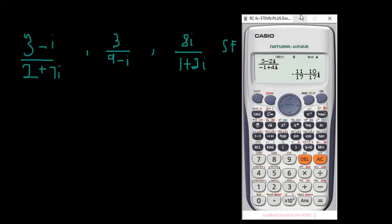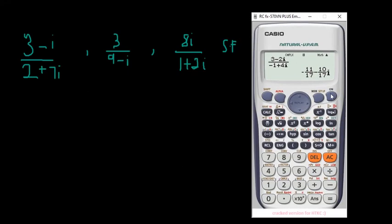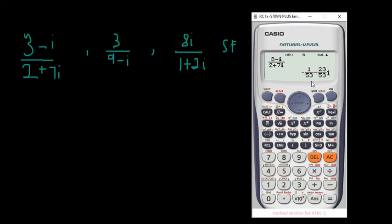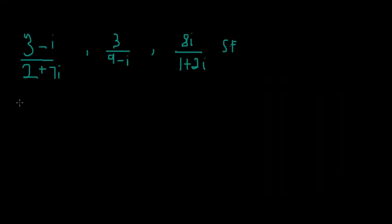Let's use the calculator. For (3 - i) / (2 + 7i): enter 3 - i in the numerator, then 2 + 7i in the denominator and calculate. The final answer in standard form is -1/53 - 23/53 i.